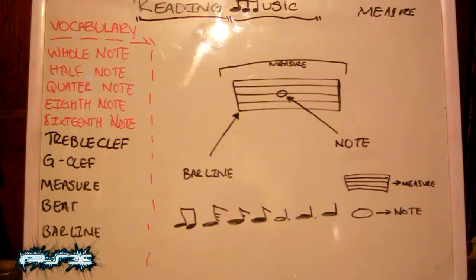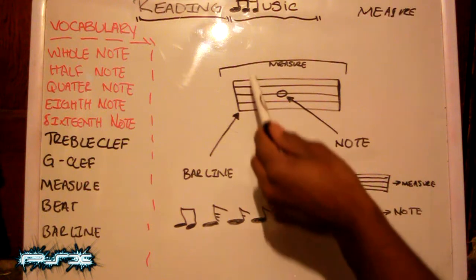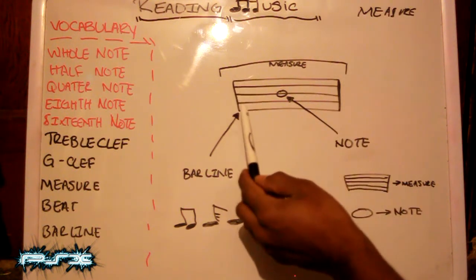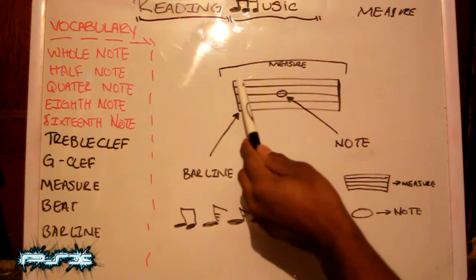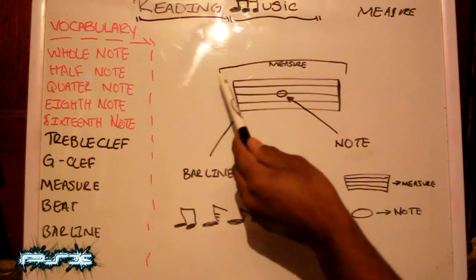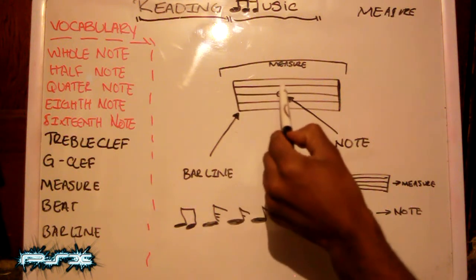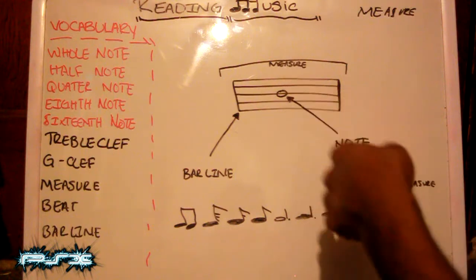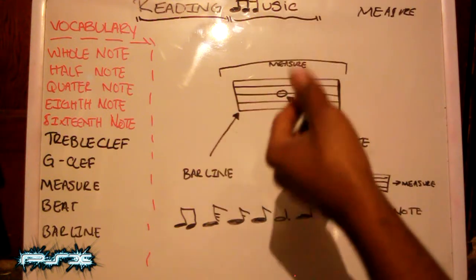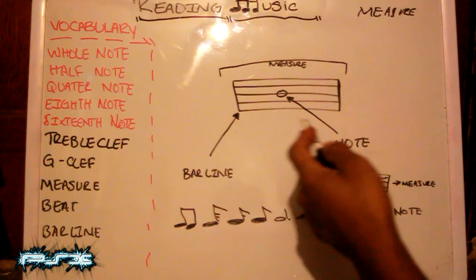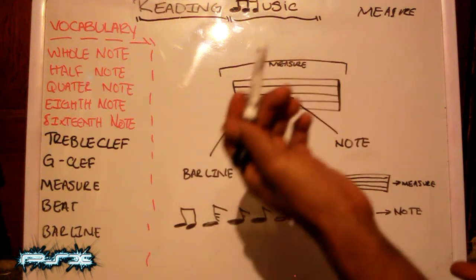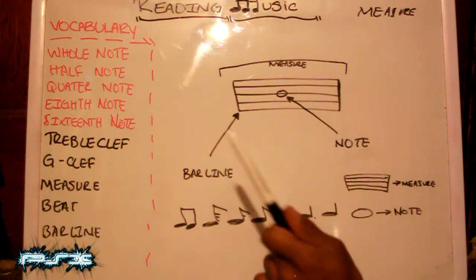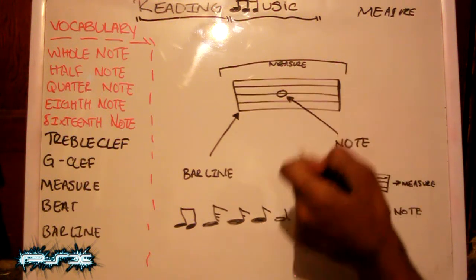Here are the components of a measure. This is what the measure looks like — it has five lines. We have the bar line here and we have the note here. The note depicts the value depending on what type it is. The bar line actually depicts the beginning and the ending of the measure.